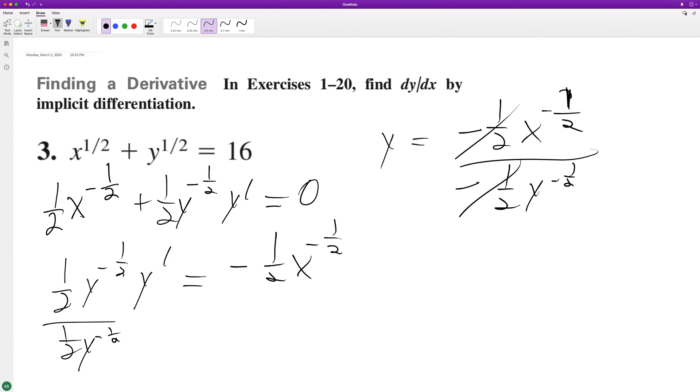The negative 1/2's cancel out, and we can rewrite this as—excuse me—y prime is equal to y raised to the 1/2 over x raised to the 1/2.